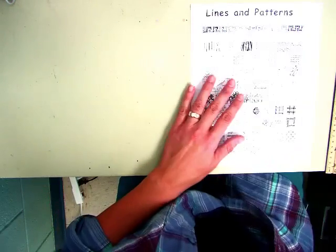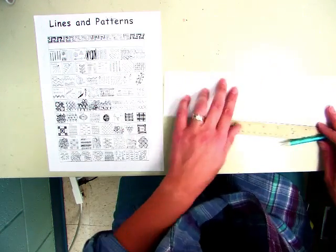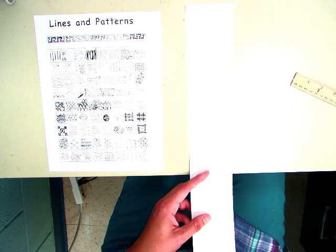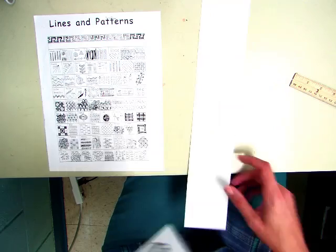At your tables today, you're going to have a sheet that has lines and pattern ideas, and you're also getting a long strip. What this is going to end up being is your sock for your shoe. We are going to make a fun, crazy pattern sock, so I want you to work on that next.